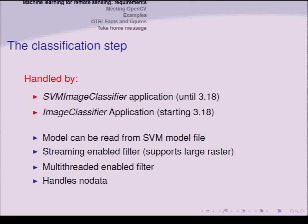Once you've trained your classifier and estimated its performance, you can apply it to your images. We have a dedicated application for this. You can read back the model from a file. The classification filter is streaming-enabled, so you can process rasters as large as you want — it processes them piecewise. It also performs classification in a multi-threaded way, which can save processing time. It also handles no-data fields.